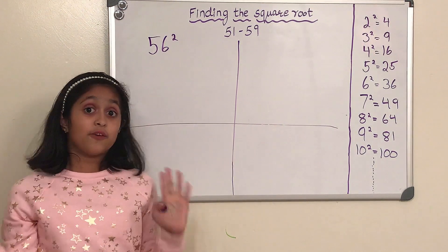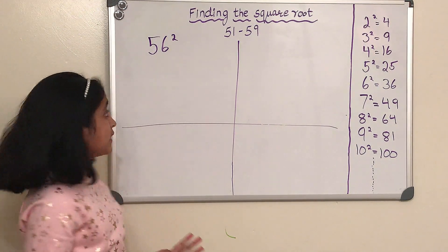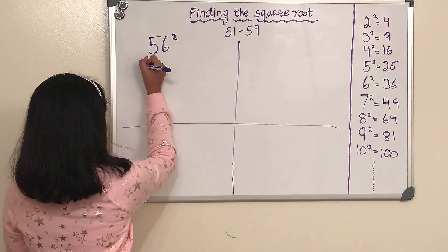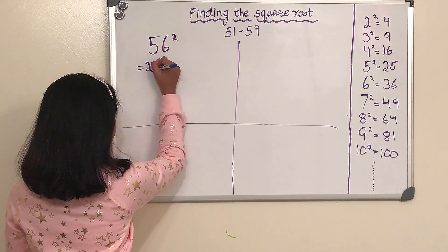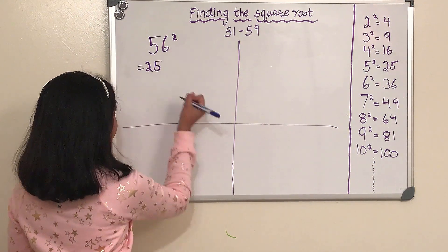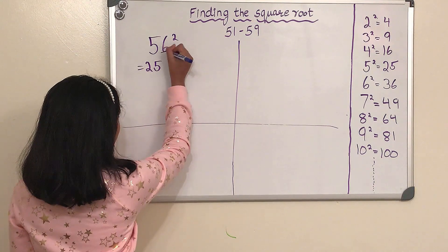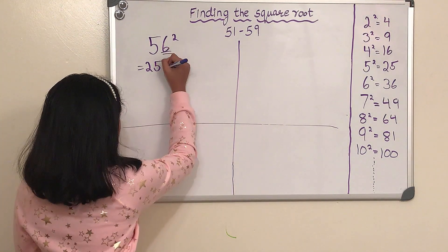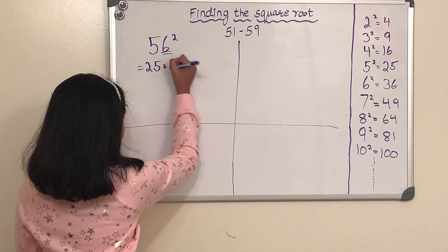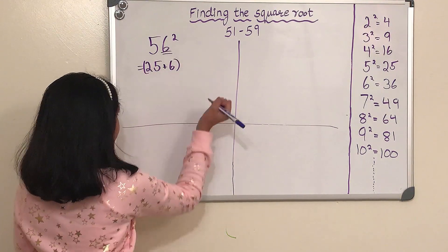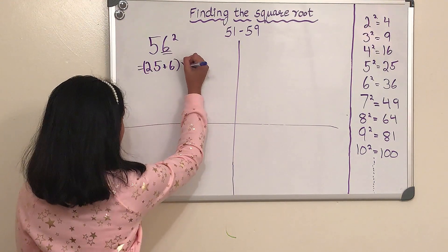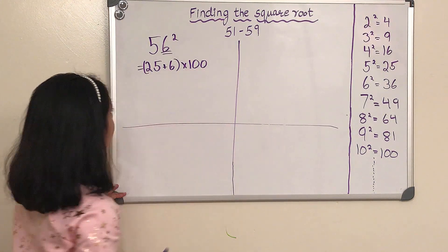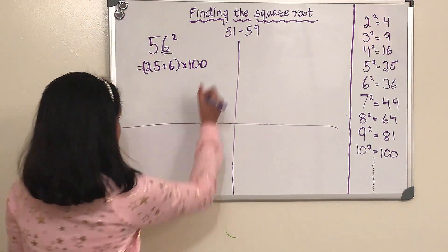Our first step is we have to do 5 squared, and that gets us 25. Now we have to add the last digit of the number, which in this case is 6. So let's add that to 25. And then we have to multiply that by 100. And then we have to add 6 squared.